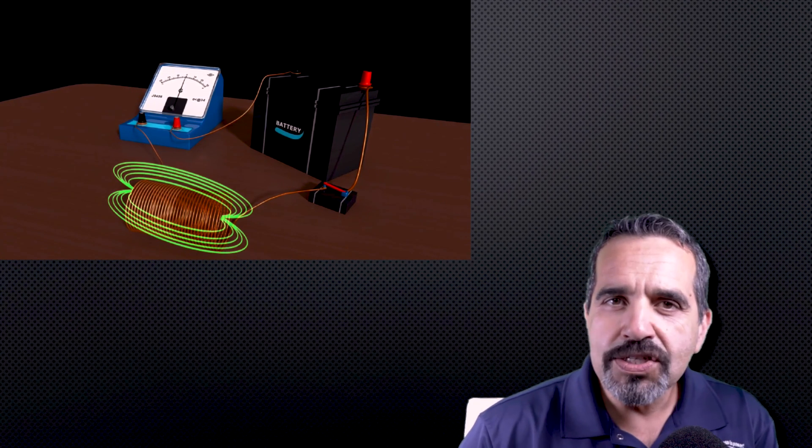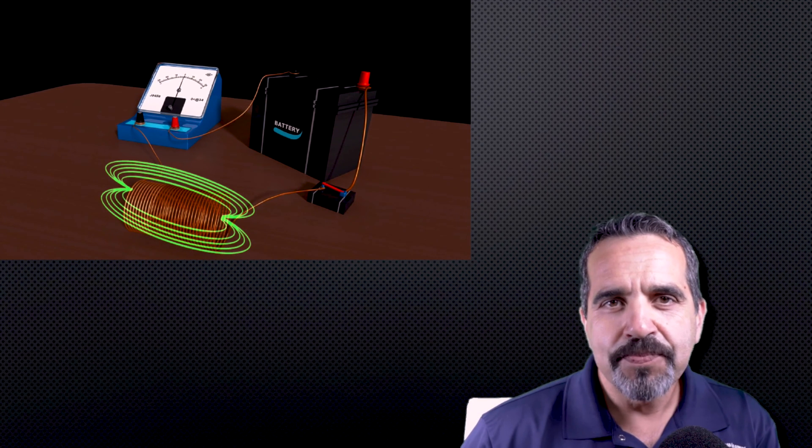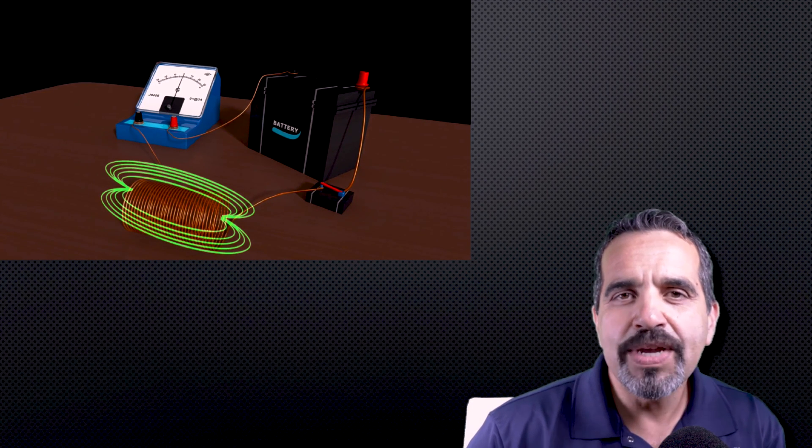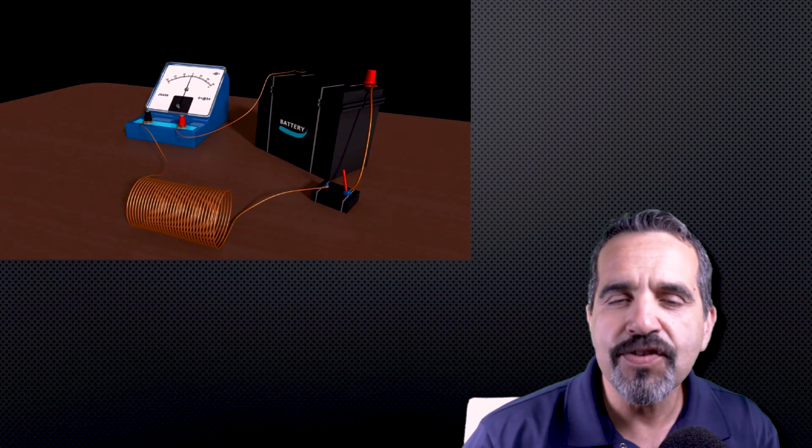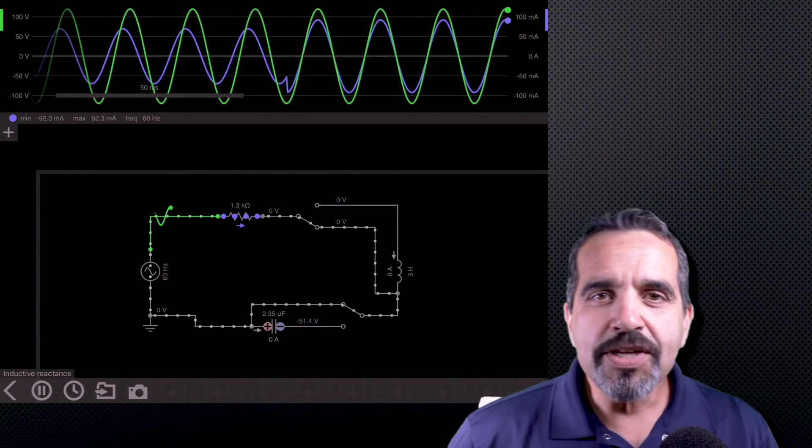The voltage immediately changes direction. So there is a lag between the current and the voltage. The current will lag the voltage in an inductive circuit like this one. So I'm going to show you my iPad.